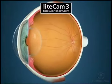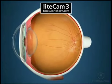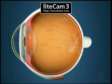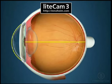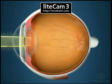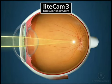Myopia occurs when the corneal shape is too steep or when the eye is too long. This causes light to come to a focus in front of the retina, resulting in blurred distance vision.